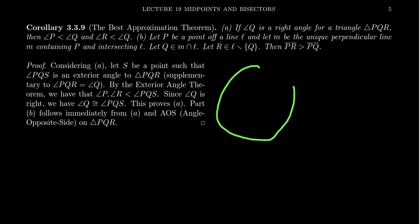I want to put this in contrast to elliptic geometry, where you can have, for example, a triple right triangle. Best approximation would fail in such a situation, because the right angle is not the biggest angle — they're all right angles. The reason this doesn't hold in elliptic geometry is that elliptic geometry is not a congruence geometry, because it has some issues with incidence and/or betweenness.